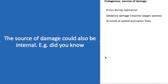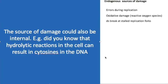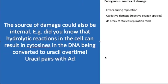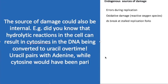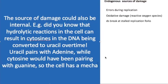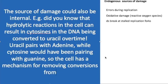The source of damage could also be internal. For example, hydrolytic reactions in the cell can result in cytosines being converted to uracil over time. Uracil pairs with adenine, while cytosine would have been paired with guanine, so the cell has a mechanism for removing conversions of cytosines to uracil.